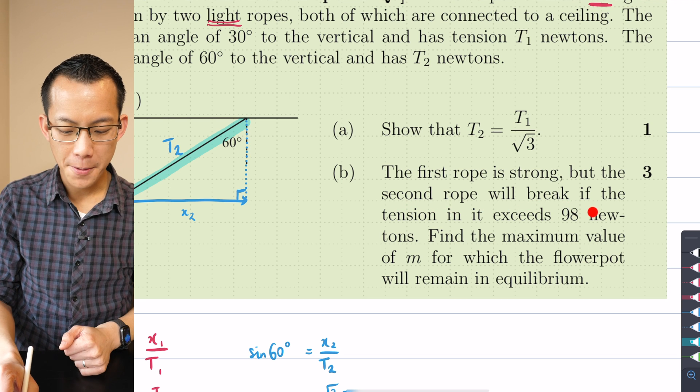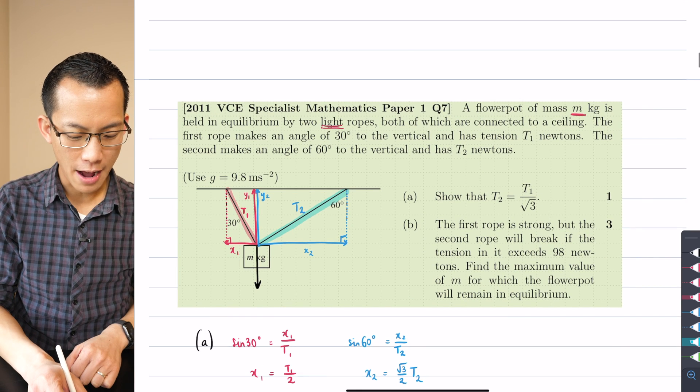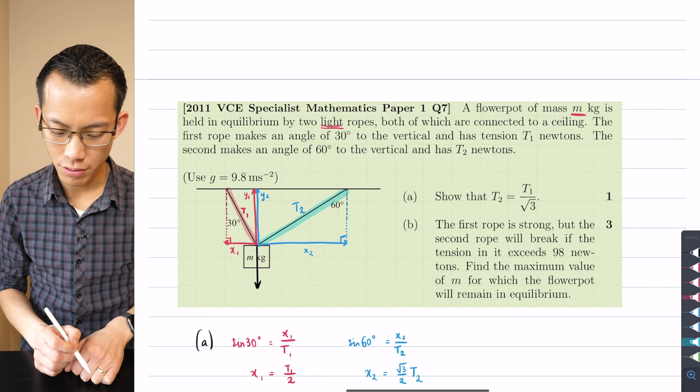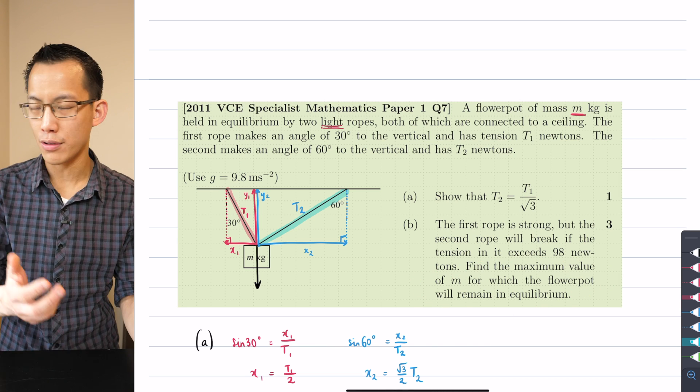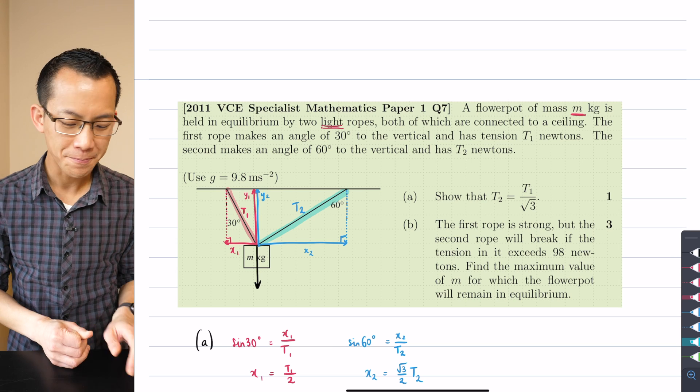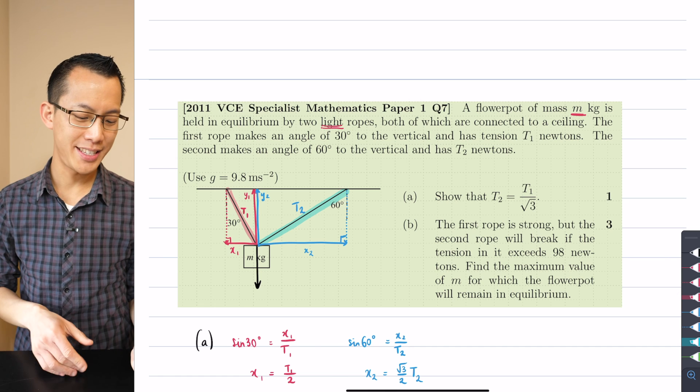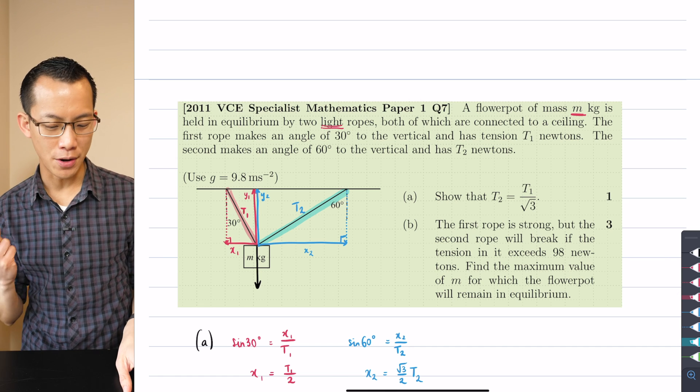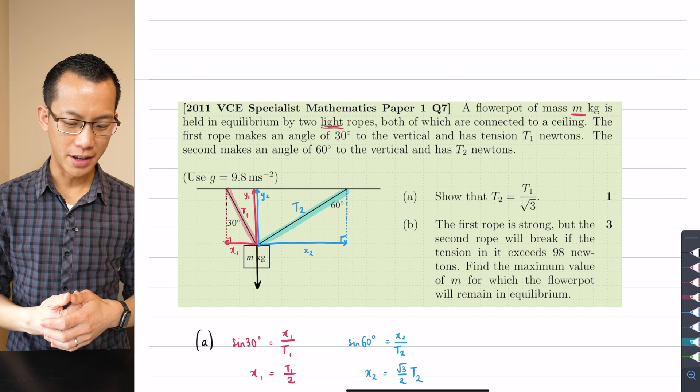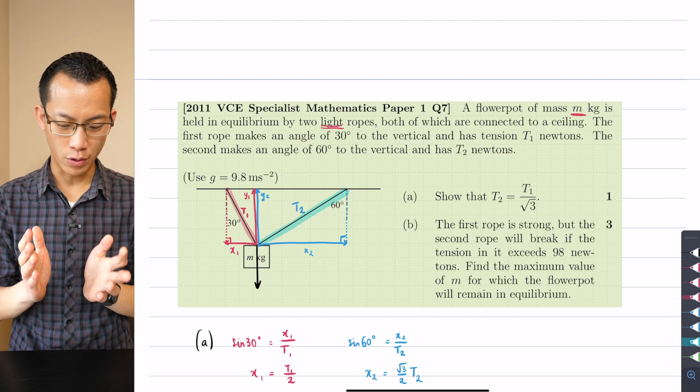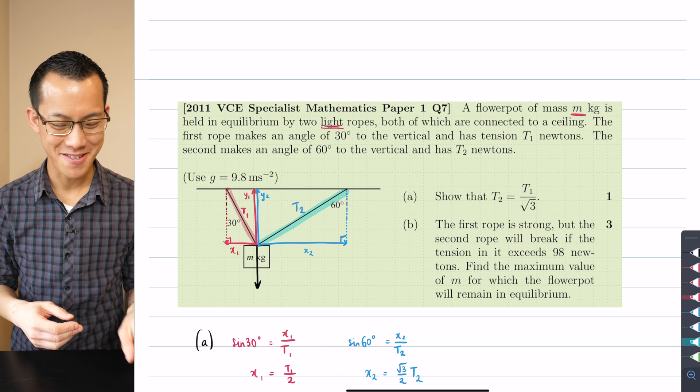The second rope will break if the tension in it exceeds 98 newtons. So I need to think about this rope here, T2, and I need to find the maximum value of M for which the flowerpot will remain in equilibrium. You can imagine if you have a super light flowerpot it's not pulling down much at all, so the upward forces keep it staying still. But if my value of M exceeds the tension in T2, then it's going to snap and the flowerpot will not remain in equilibrium anymore.